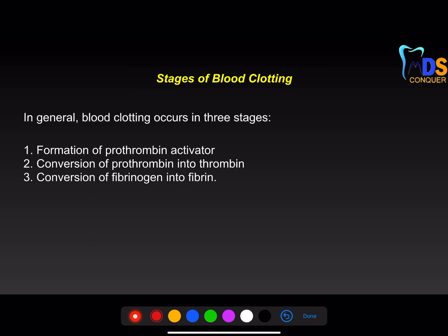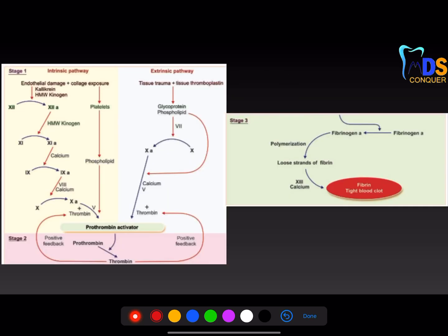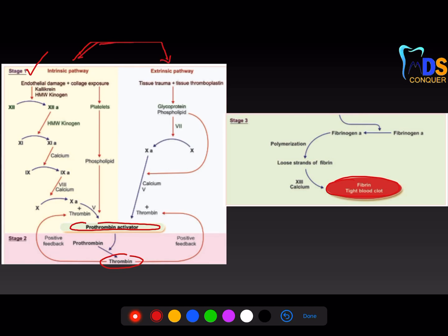Once you are done with this, you need to write about the stages of clotting, which includes three stages: formation of thromboplastin activator, conversion of prothrombin to thrombin, and conversion of fibrinogen to fibrin. Step one is the thromboplastin activator, step two is conversion of prothrombin to thrombin, and step three is formation of fibrin from fibrinogen.